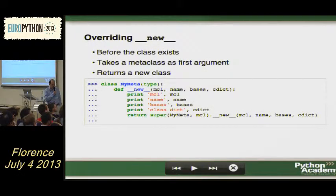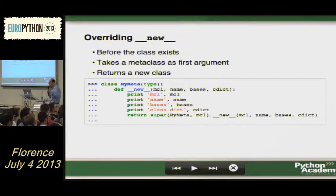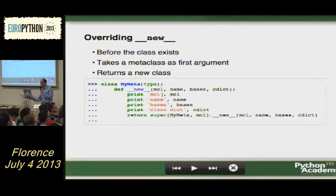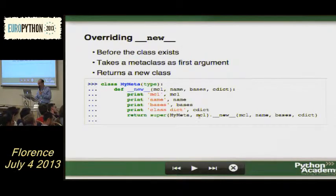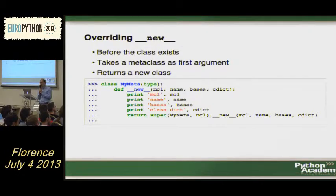Usually when you define your own metaclass you either overwrite __new__ or __init__. When you work with normal classes most of the time you work with __init__. __new__ is called before __init__. If you use __new__ with a metaclass, the first argument is the metaclass itself, then the name of the class, then the tuple of base classes, and the class dictionary. You call the parent using super. A lot of places you can get away with __init__, but some places like working with slots you need __new__.